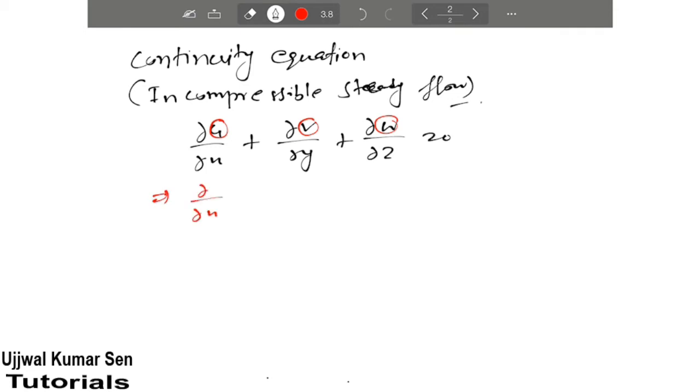After putting values, what we are getting: curly upon curly x of minus curly phi upon curly x plus curly upon curly y of minus curly phi upon curly y.